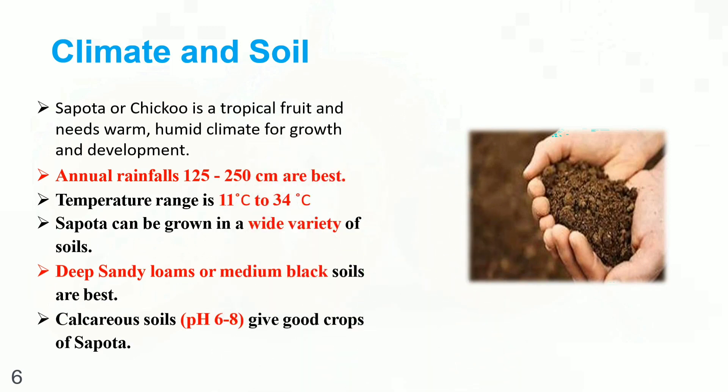Climate and Soil. Chikku is a tropical fruit and needs a warm, humid climate for growth and development. Annual rainfall of 125 to 250 cm is best. Temperature range is 11 degrees Celsius to 34 degrees Celsius. Spotter can be grown in a wide variety of soils. Deep sandy loam or medium black soil are best. Calcareous soils with pH 6 to 8 give a good crop of Chikku.